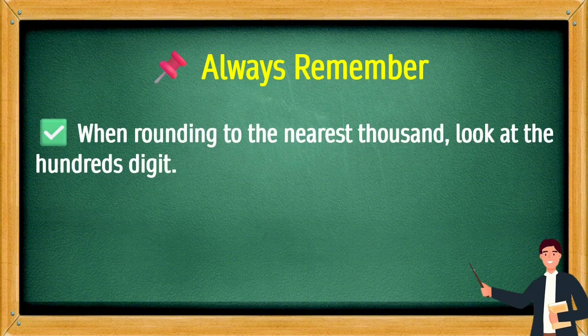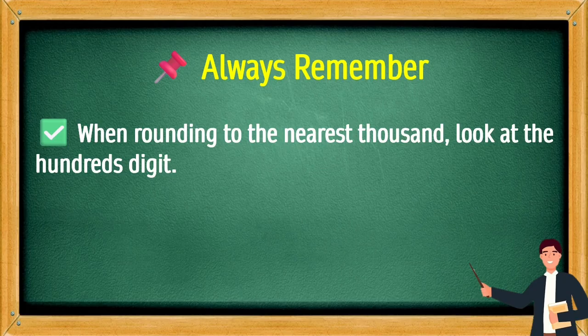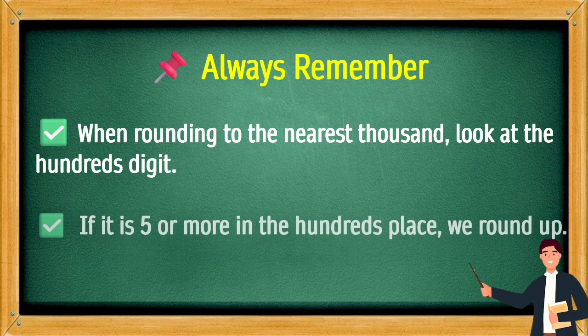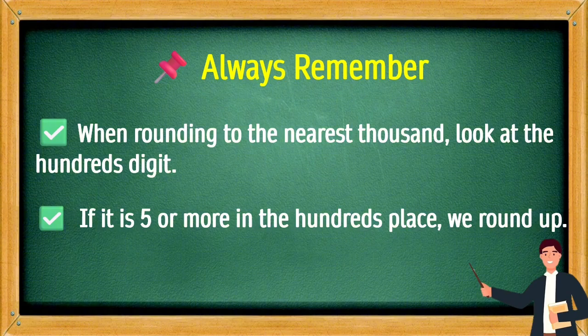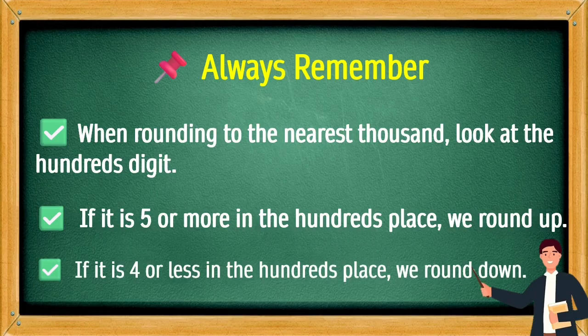Always remember: When rounding to the nearest thousand, look at the hundreds digit. If it is 5 or more in the hundreds place, we round up. If it is 4 or less in the hundreds place, we round down.